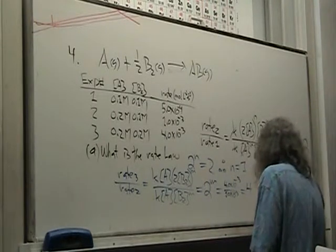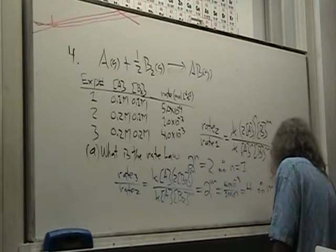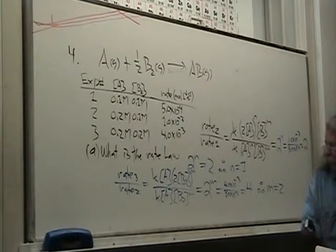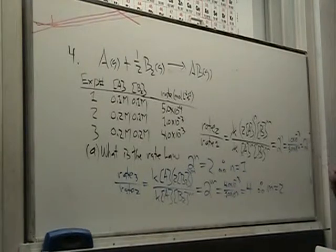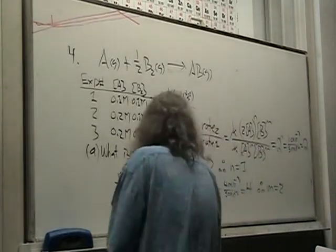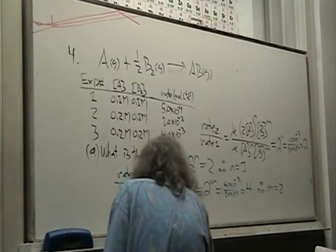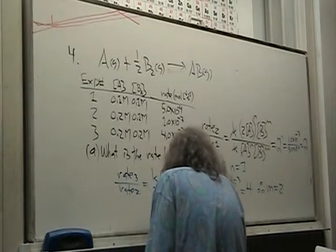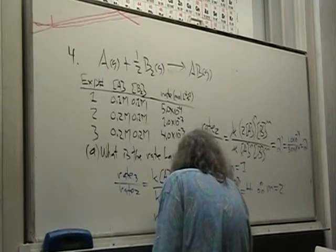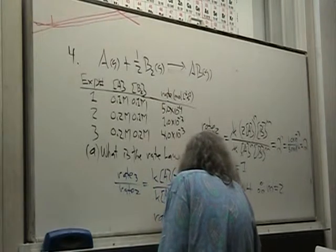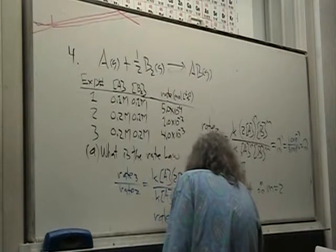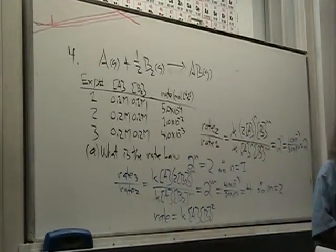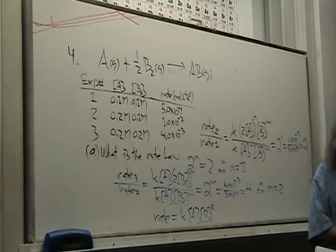And that is equal to 4.0. And therefore, M is equal to 2. Now, we now announce second order with respect to B. We've shown that. And this gives us the rate law. The rate is equal to K times A, first order of A, second order of B2. That answers that question.